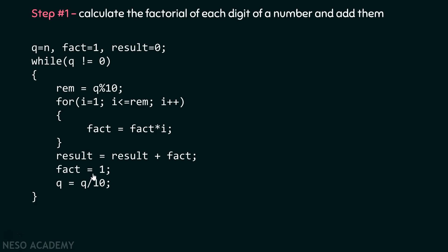Let's trace through with the number 145. q is initialized to 145. Since 145 ≠ 0, we enter the while loop. rem = 145 mod 10 = 5, giving us the last digit 5. We then execute the for loop from 1 to 5 to calculate 5 factorial.